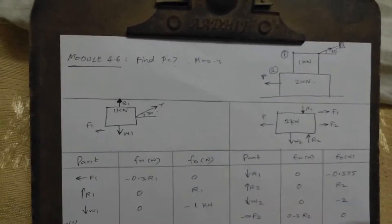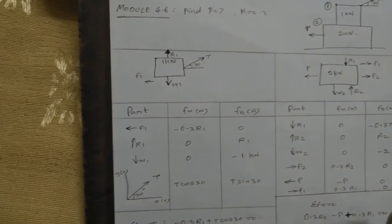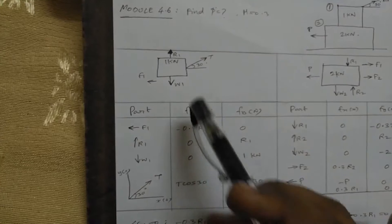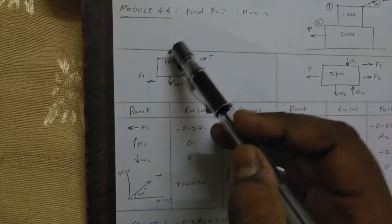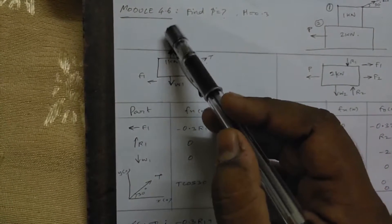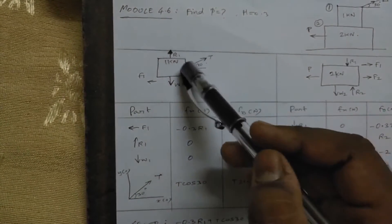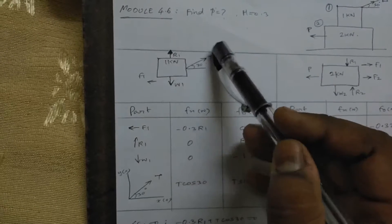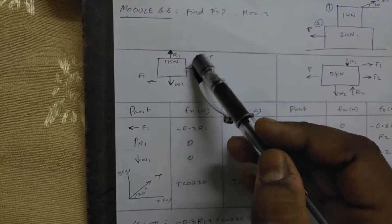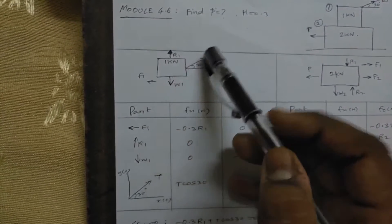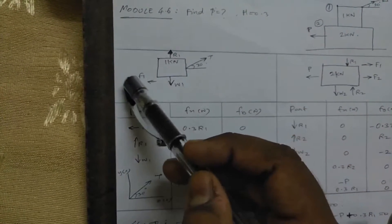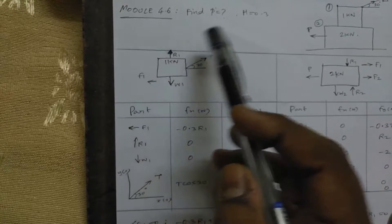Regarding the first block, we have to take the free body diagram. The load is always going down, reaction always acts against it, tension is at 30 degrees, and friction acts opposite to the direction of motion.